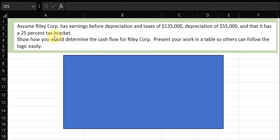So it's in a 25% tax bracket. Show how you would determine the cash flow for Riley Corp. Present your work in a table so others can follow the logic easily.